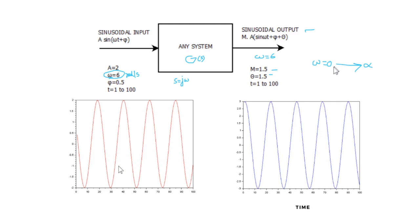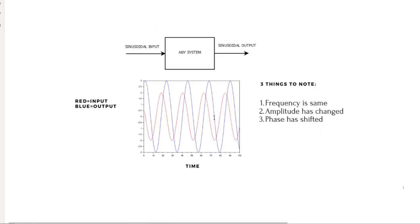On the x-axis of a Bode plot we have frequency; on the y-axis we have magnitude and then phase. This is the relationship studied in a Bode plot. You can see more clearly when I plot both input and output sine waves on the same plot — frequency is the same, amplitude has changed, and phase has shifted.